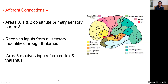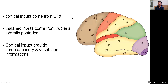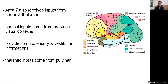Regarding afferent connections of the parietal lobe: areas 3, 1, and 2 constitute the primary sensory cortex and receive inputs mainly from all sensory modalities through the thalamus. Area 5 receives input from both cortex and thalamus — cortical inputs from somatosensory area 1, and thalamic inputs from nucleus lateralis posterior, providing somatosensory and vestibular information. Area 7 also receives input from cortex and thalamus, with cortical input from peristriate visual cortex and thalamic input from the pulvinar part of the thalamus.